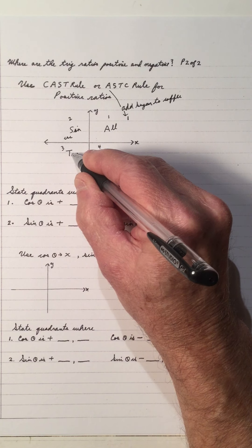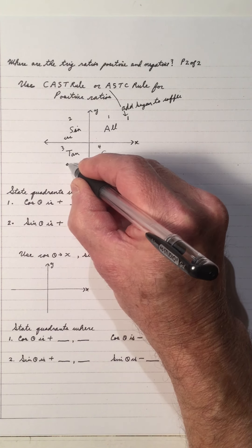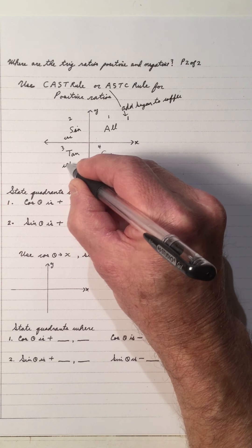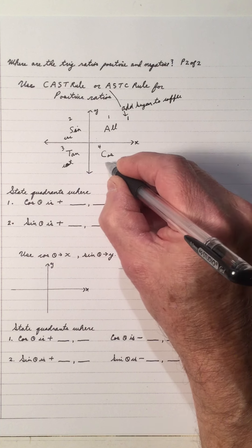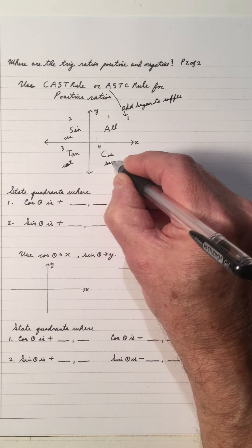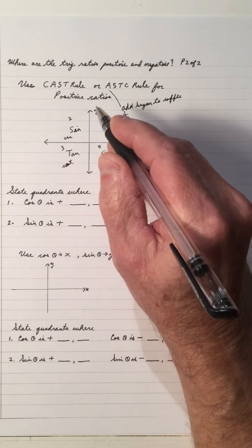Tan is positive in 3, and also that means cot is positive. And if cos is positive in 4, that means that secant, the reciprocal, is positive.